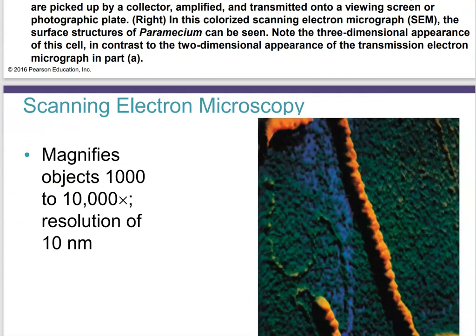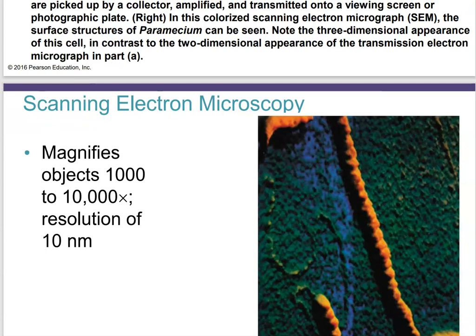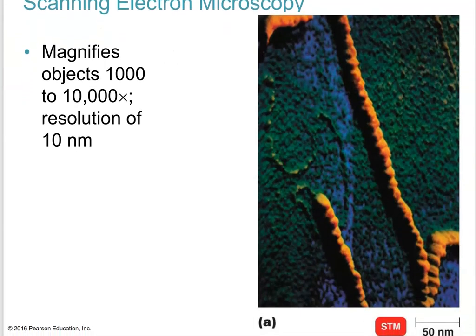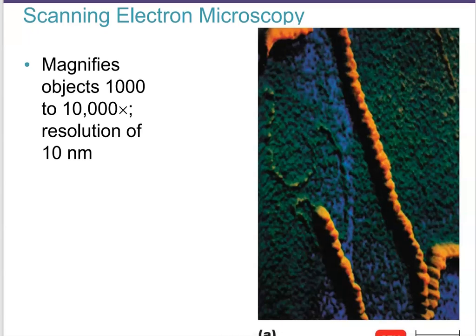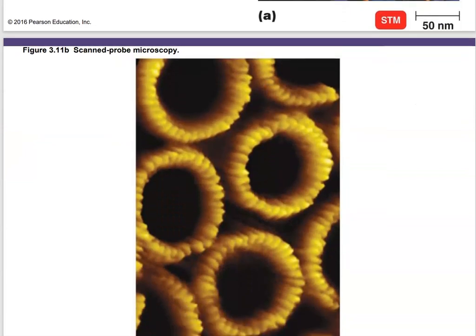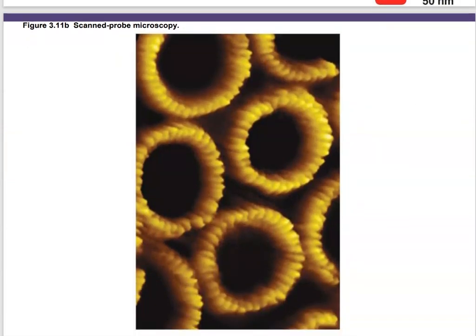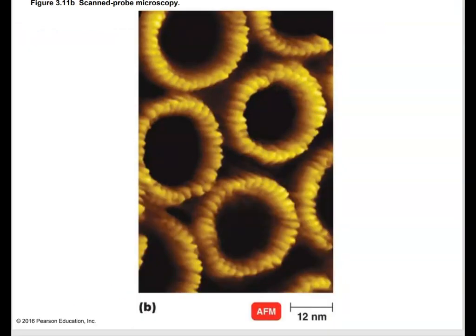With scanning electron microscopy, you magnify objects 1,000 to 10,000 fold and have a resolution of about 10 nanometers — about the size of a DNA molecule. That concludes our survey of different microscope types. Be sure you understand the three principles of microscopy — magnification, resolution, and contrast — how to calculate total magnification, and the parts of the compound light microscope. We'll stop the microscopy section here and have another video on staining, which will be very important.